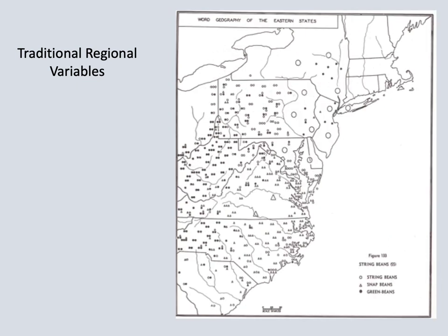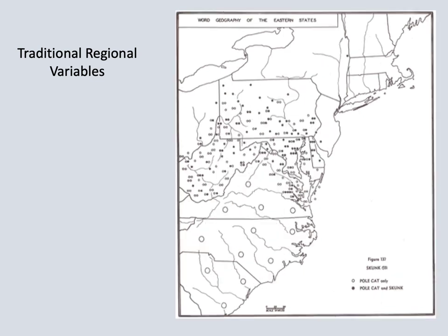Similar sort of thing with different words for string beans. You have string beans as the common term in the north. In the Midland area, the term green beans is preferred. And in the south, the term snap beans is the preferred term traditionally. A skunk is the normal term in most of the north, but this animal is sometimes called a polecat in the south. And there's an area in between where both terms, polecat and skunk, are used.